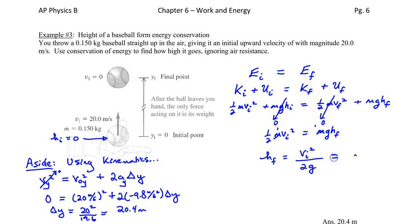Guess what? Going to give you the same answer that we got when we did with kinematics. That's 20 squared divided by 2 times 9.8 meters per second squared. And the final height that the ball rises to is 20.4 meters.